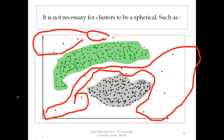These points are not belonging to any class. In the diagram, this is cluster one and this is cluster two. These points are not belonging to either cluster one or cluster two.